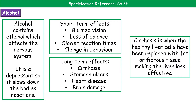Second is alcohol consumption. The key problem is ethanol, which affects our nervous system. It's what we refer to as a depressant, meaning it slows down the body's reactions. We can divide the effects of alcohol into two categories: short-term and long-term effects.